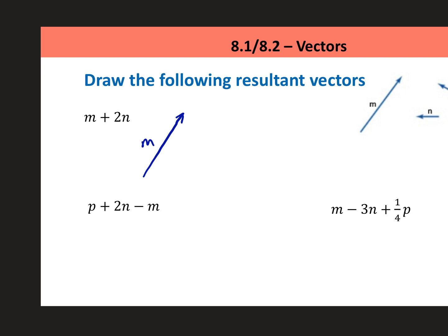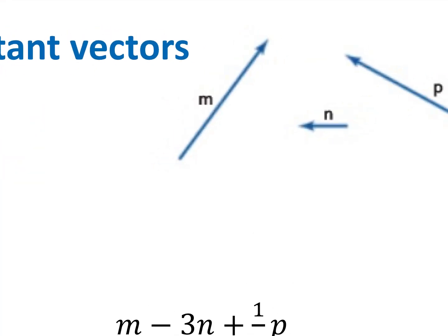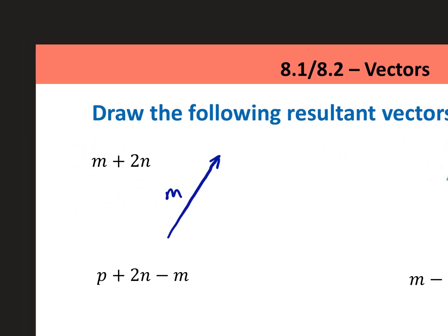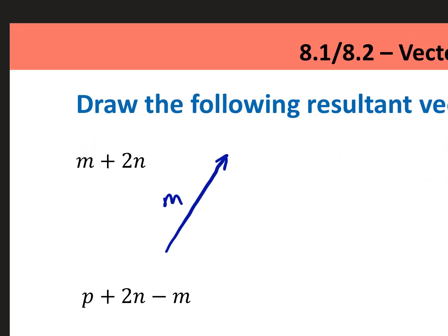And then I'm going to add two n to it. I'm going to take two vector n's and attach them to the end of the arrow for vector m. Vector n is a little tiny vector that goes straight to the left. So at the end here, I'm going to add vector n. There's vector n, and then another vector n. This is m, and that is two n.